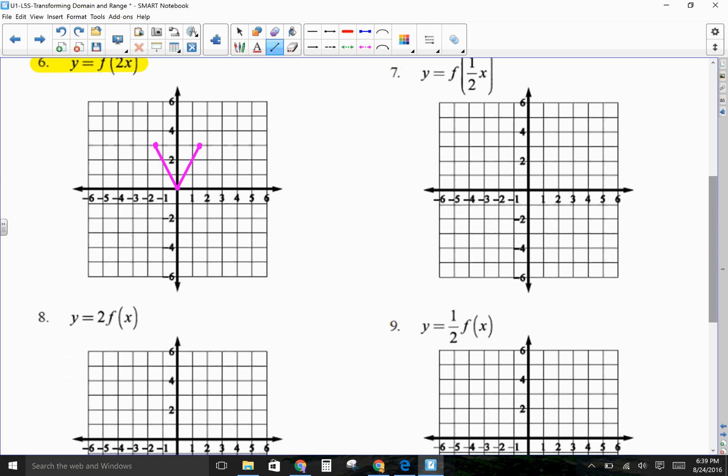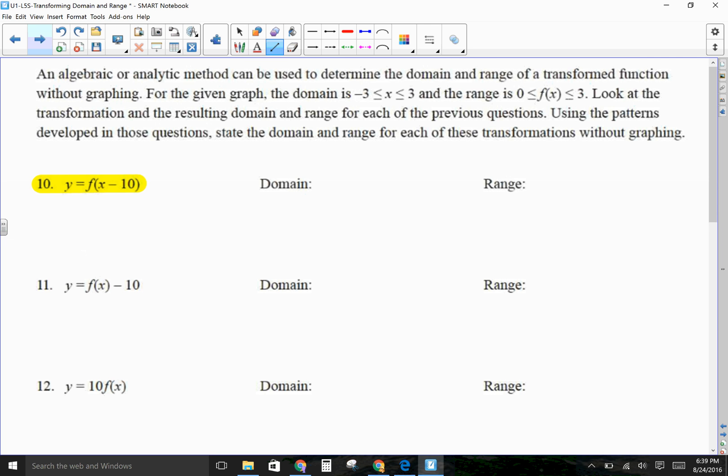The rest of those you should be able to handle. The only other thing that I want to tell you about is, this time you're doing the exact same thing with the graph that we had before, but they're not giving you the picture. So, the domain is from negative 3 to 3, and the range is from 0 to 3.